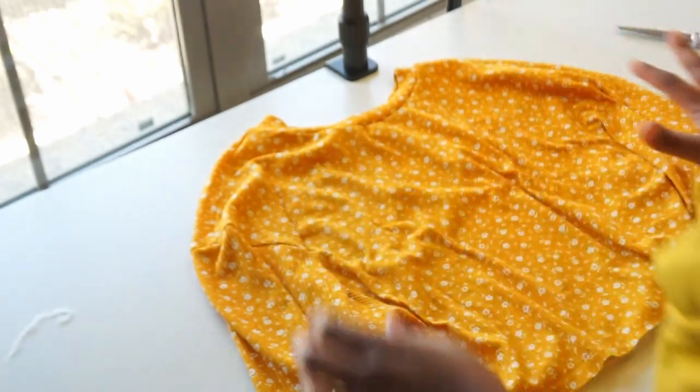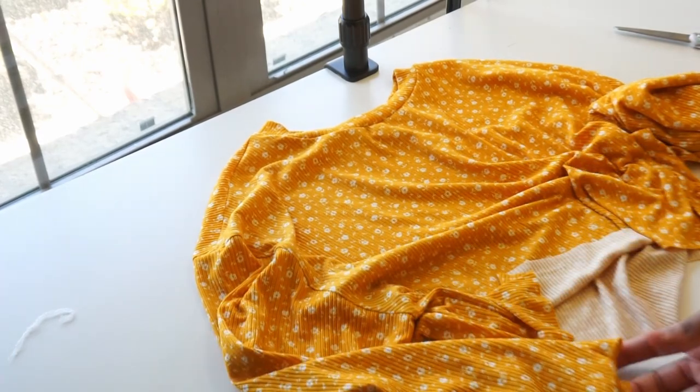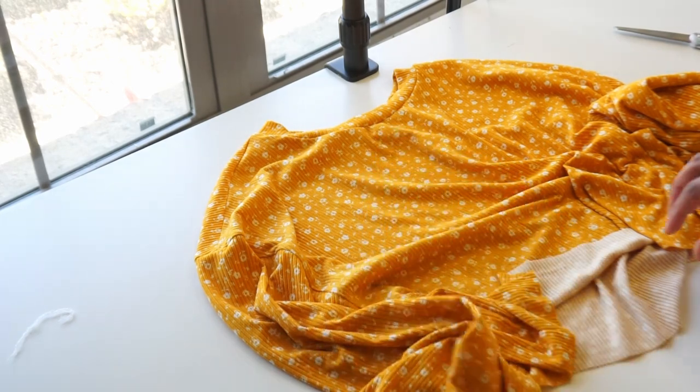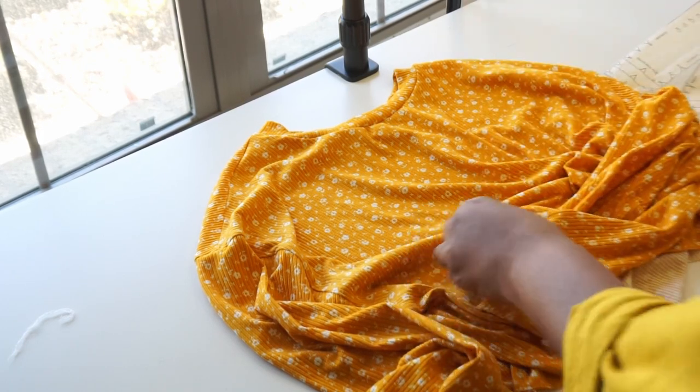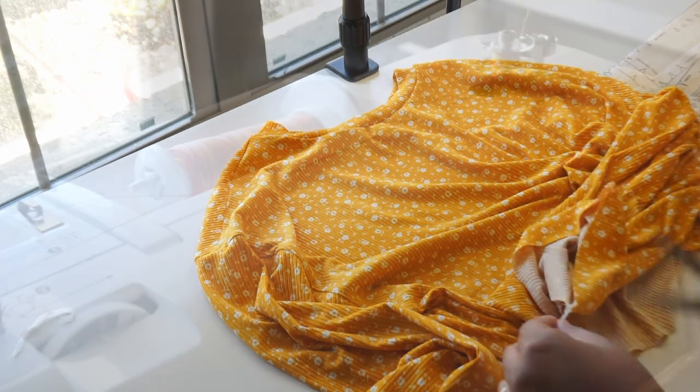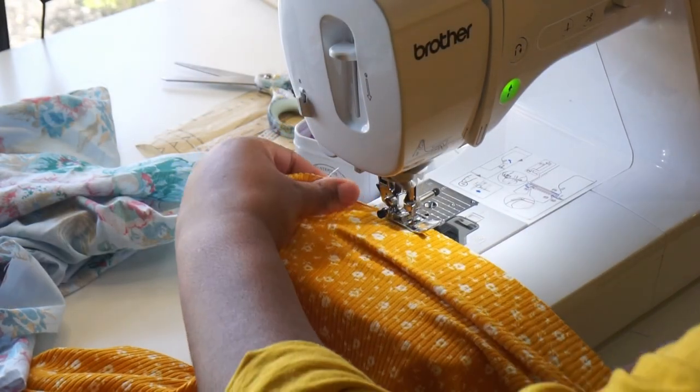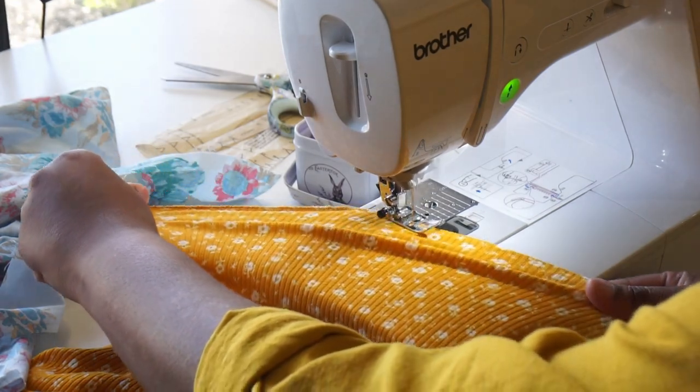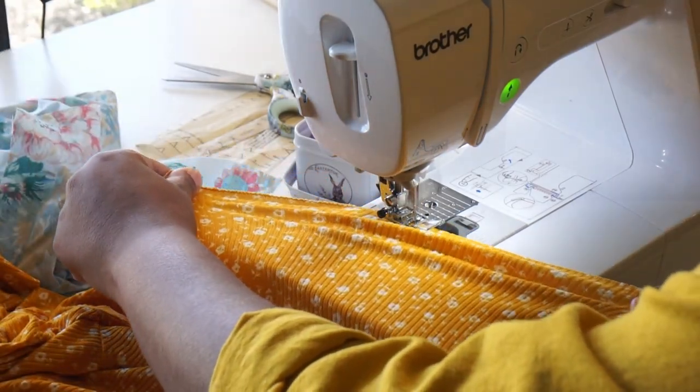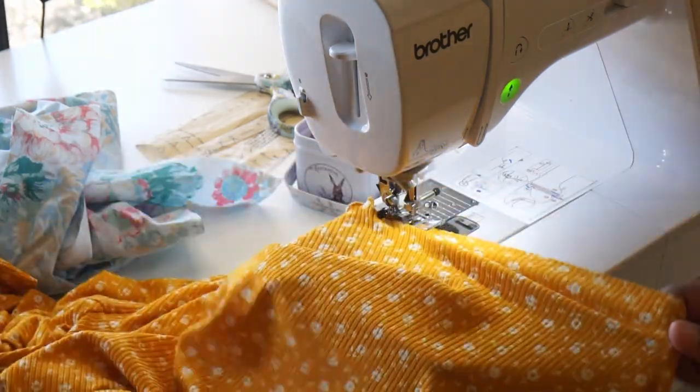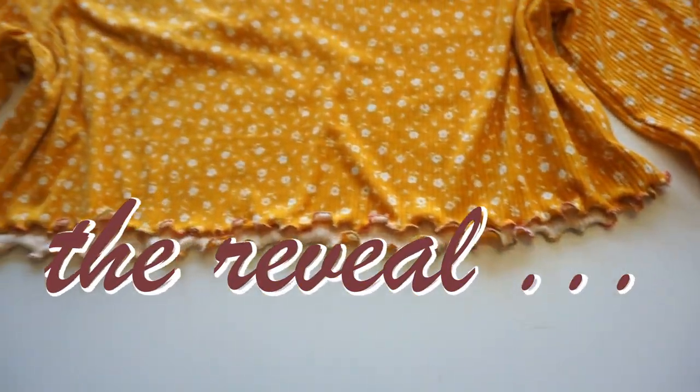All right, so the shirt, for the most part, is constructed. Now the last thing that we need to do is go ahead and finish off the hem. And we are going to do that using a lettuce hem, and I'm going to do that on the regular sewing machine. So I'm going to snip off all these extra serger threads. Then I'm going to switch my machines, and we're going to lettuce hem this thing and be done.